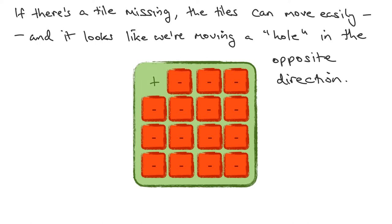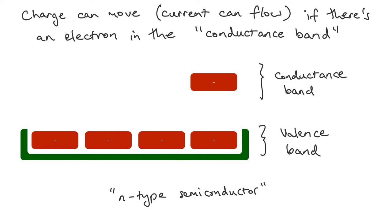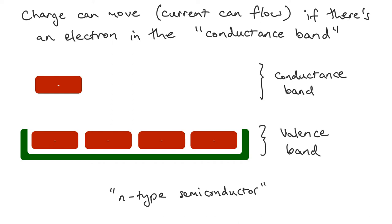Now what I'm going to do is take my tray of tiles and flip it on its side — look at it edge on. Let's say there's only a tray of four of them, one layer deep. This is the situation where we have one loose tile sitting on top. I'm going to call that extra loose tile an electron in the conductance band. And so if I have an electron in the conductance band, then it can move and it can conduct electricity. And so this is what we call an n-type semiconductor — it's called n-type because the charge carriers are these electrons, and electrons have a negative charge.